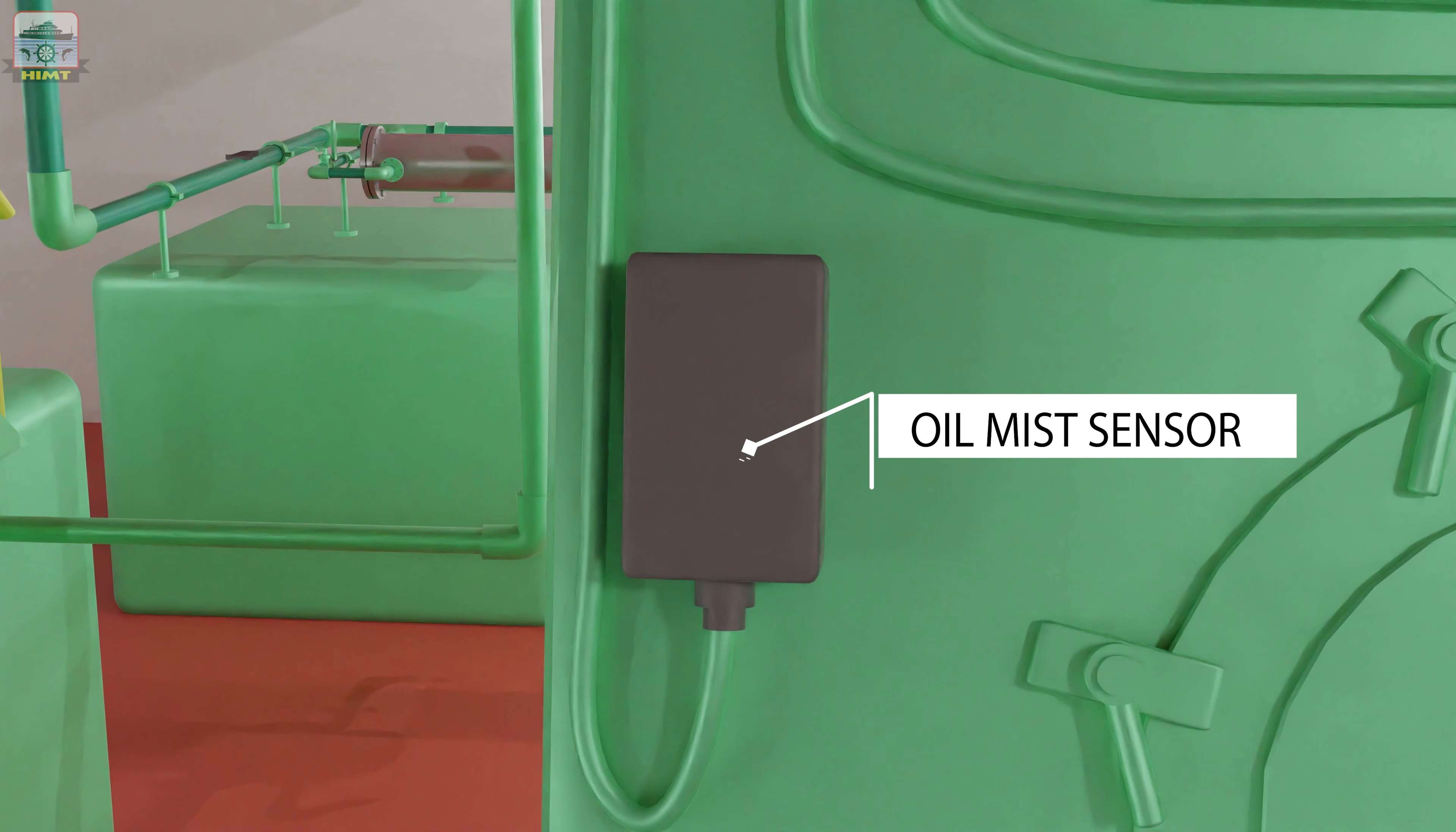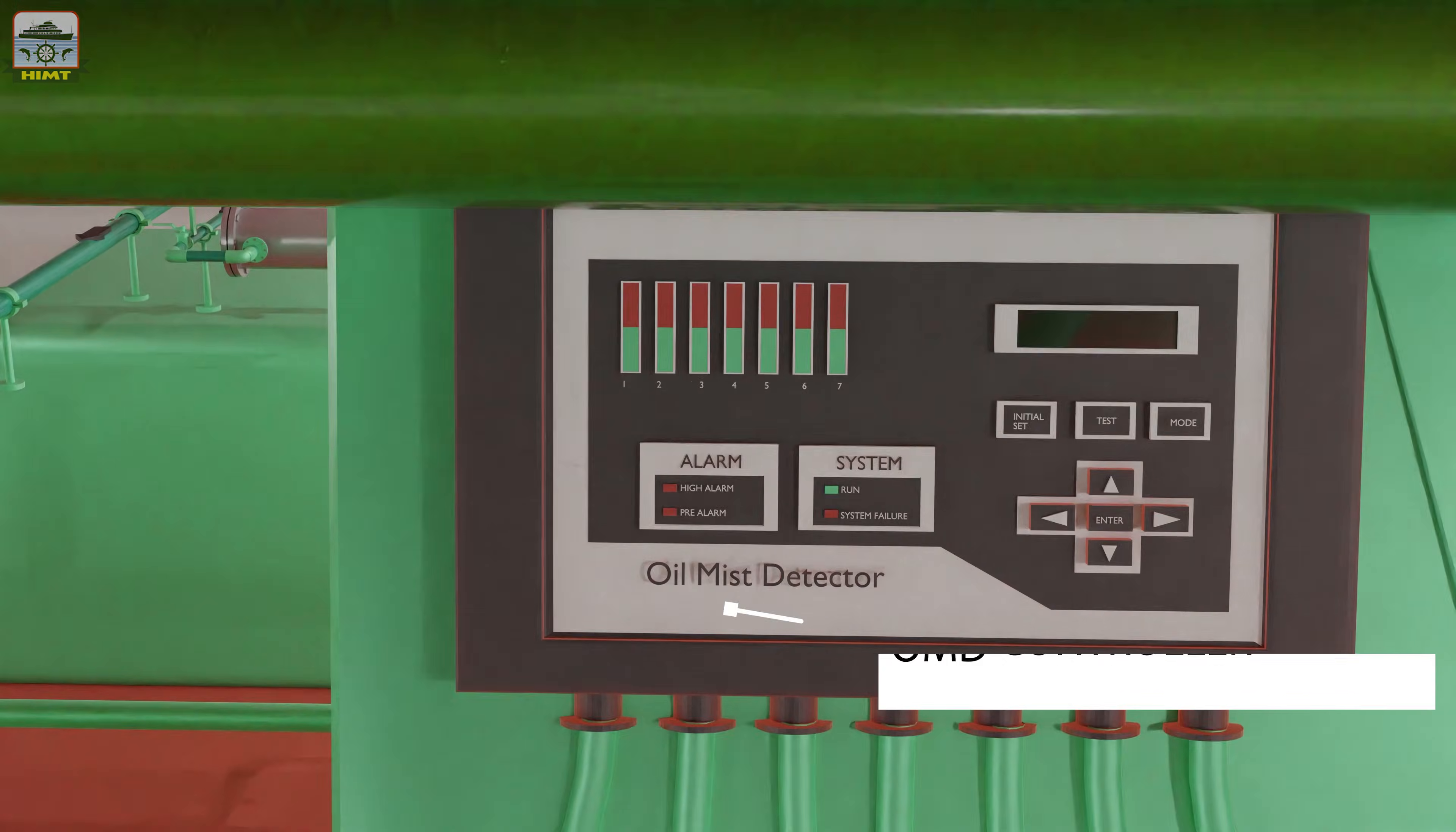The oil mist sensor fitted in each unit crankcase communicates the oil mist density to the oil mist detector controller unit. The controller continuously shows the oil mist concentration of all units and raises the alarm if the concentration exceeds the preset value. If required, the engine is slowed down, thereby preventing crankcase explosion.